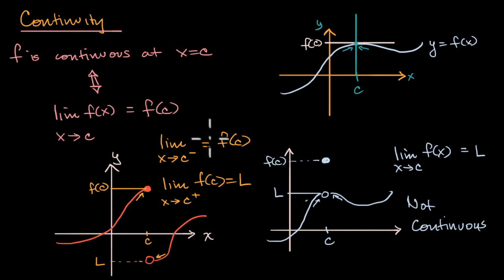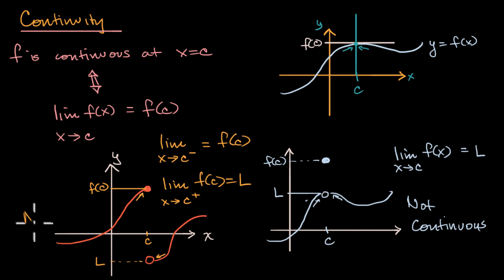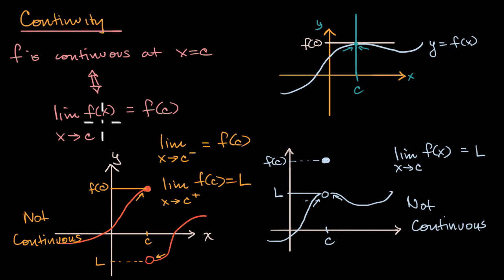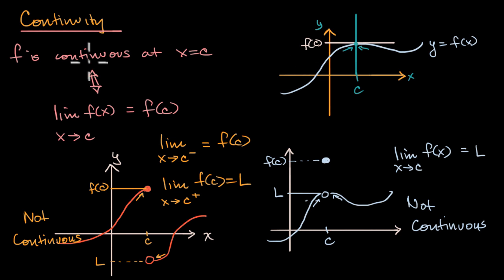This is not continuous, both intuitively by the pick-up-the-pencil definition and by the more rigorous definition — in this case, the two-sided limit at x equals c doesn't even exist. But even when the two-sided limit does exist but is a different value than the value of the function, that will also not be continuous. The only situation that is going to be continuous is if the two-sided limit approaches the same value as the value of the function — if that's true, then we're continuous, and if we're continuous, that will be true.